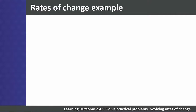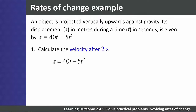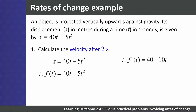Let's work through the solution together. An object is projected vertically upwards against gravity. Its displacement s in meters during time t in seconds is given by s = 40t - 5t². Displacement is a function of time: f(t) = 40t - 5t². Question 1: calculate the velocity after 2 seconds. The first derivative gives velocity: f'(t) = 40 - 10t.